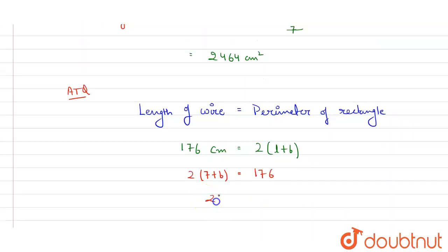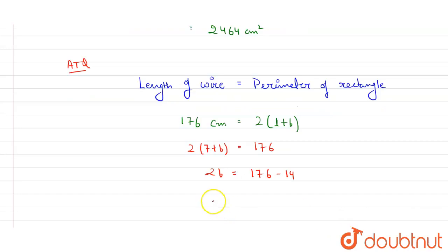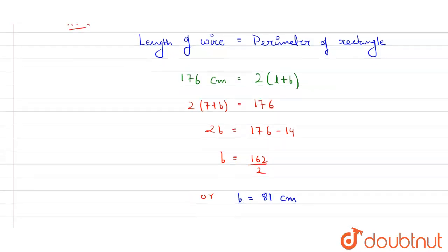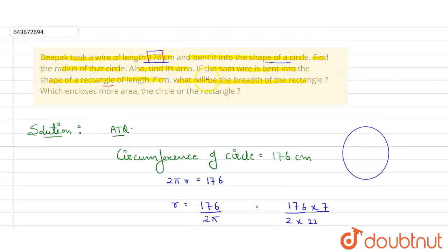From here I'll get 2b equals 176 minus 14. So value of b will be 162 divided by 2. Value of my b will be equals to 81 centimeter. So now I have got the value of my breadth, it was given what is the breadth, done.